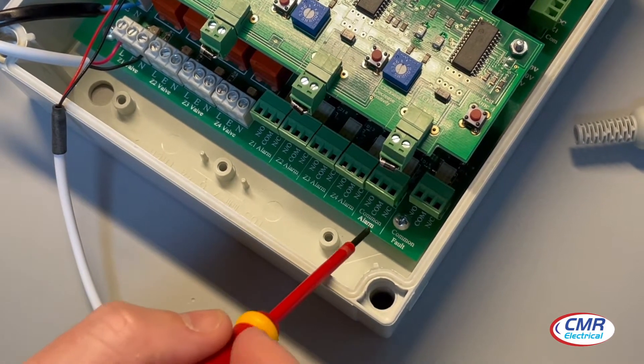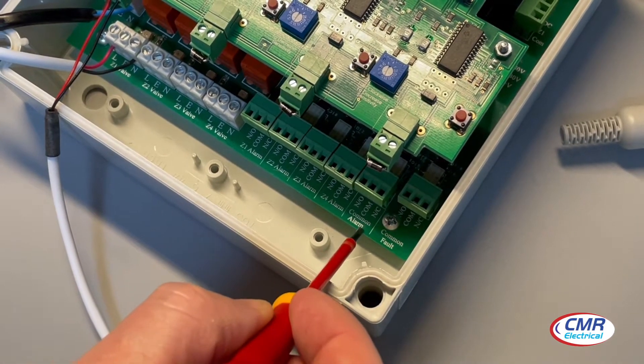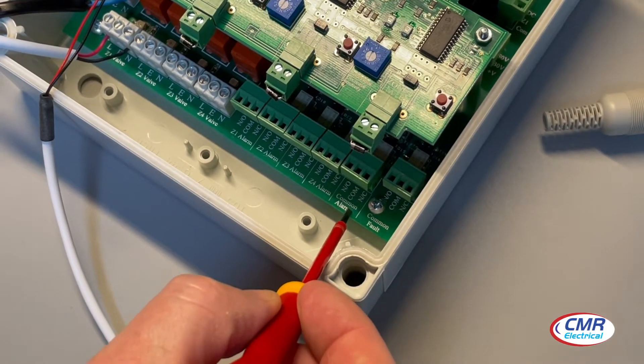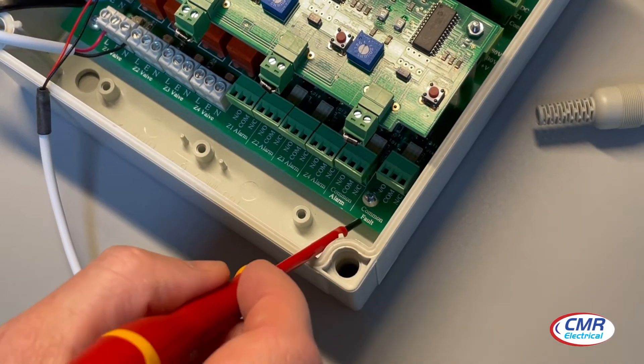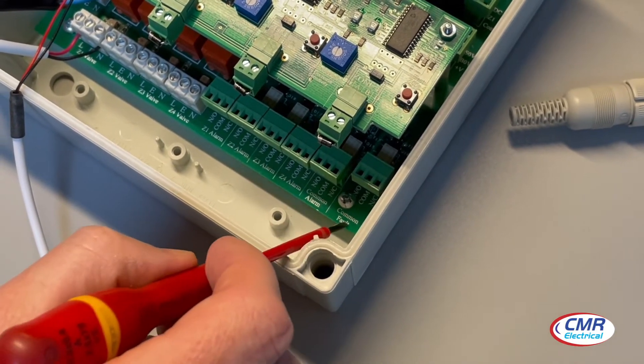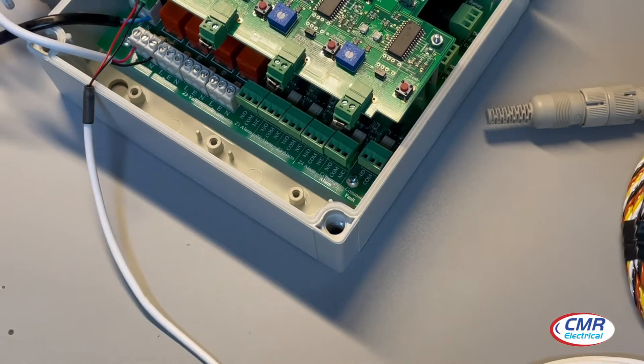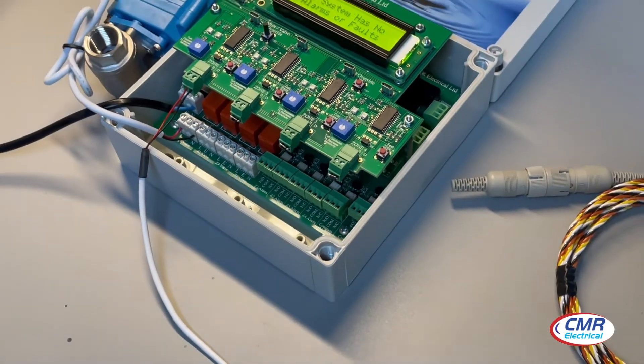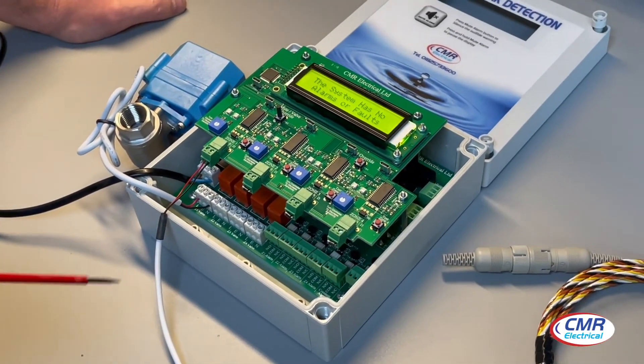Moving on, we have also common alarm volt-free contacts for the BMS system. Next to this we have common fault volt-free contact for the BMS connection. This is obviously if any of the zones get damaged or cut, this will notify the BMS system that there's a problem.